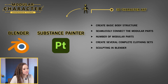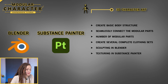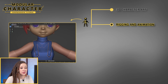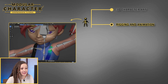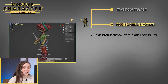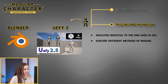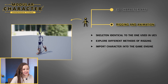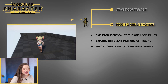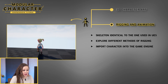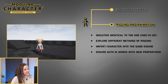Rigging and animation: I plan to create a character that can be used with standard animations in Unreal Engine. To achieve this, we'll create a skeleton identical to the one used in Unreal Engine. We will explore different methods of rigging our character in Blender, including a free method and using a paid add-on. Afterward, we'll import our rigged character into the game engine and ensure the animations work flawlessly. We'll even make some tweaks to the code to ensure that Auto-IK works with different proportions.